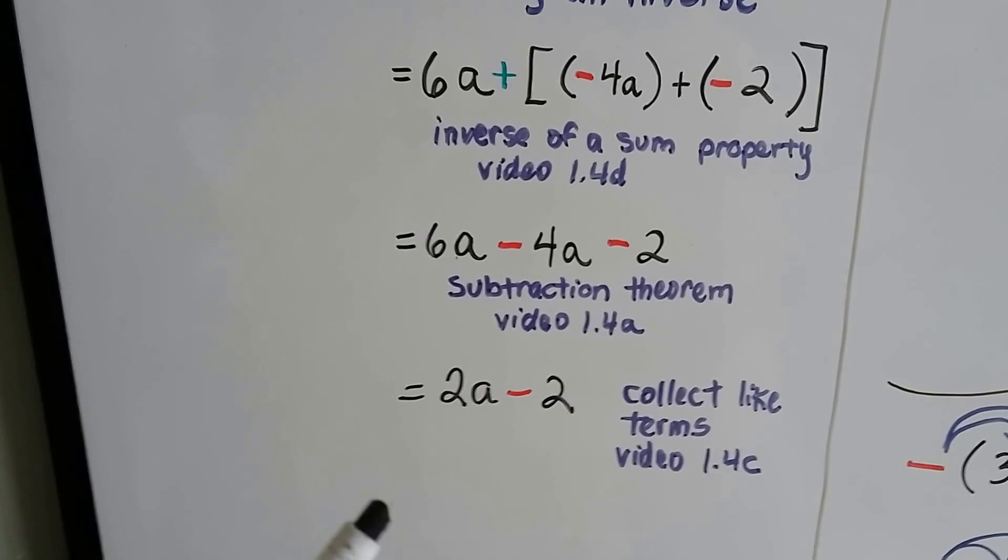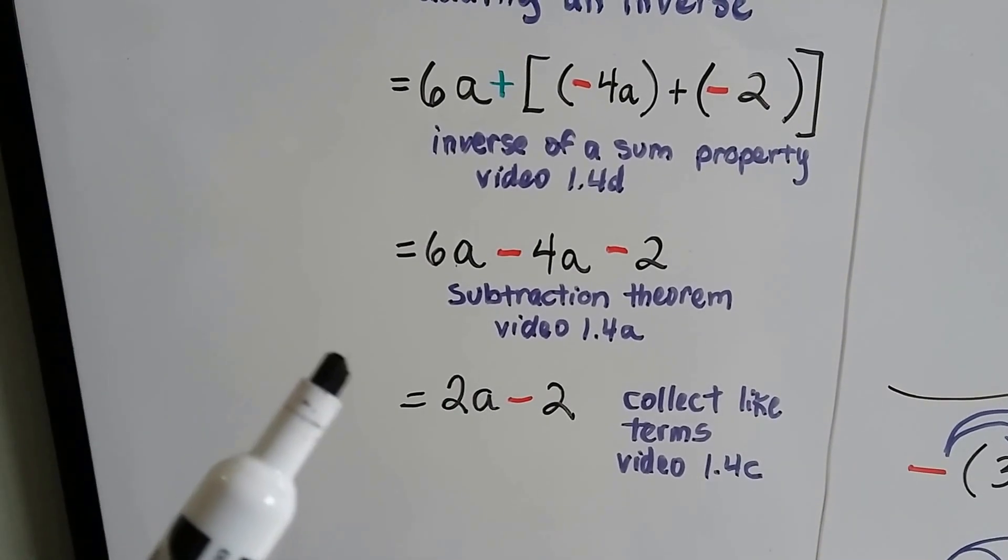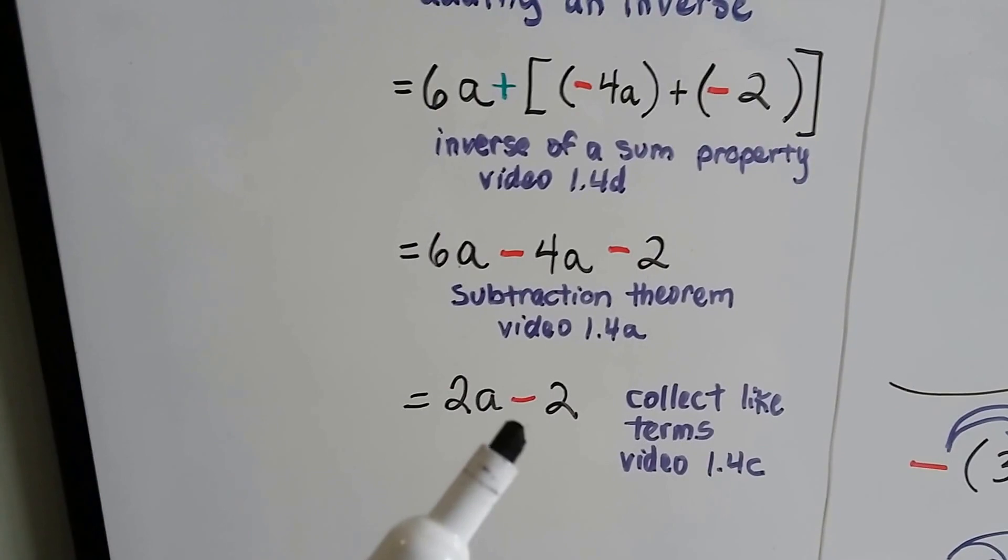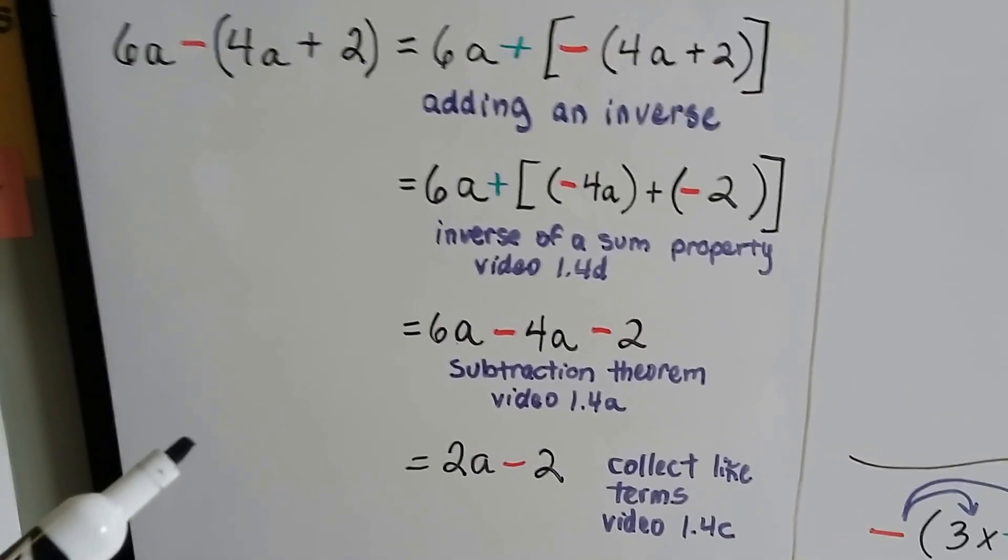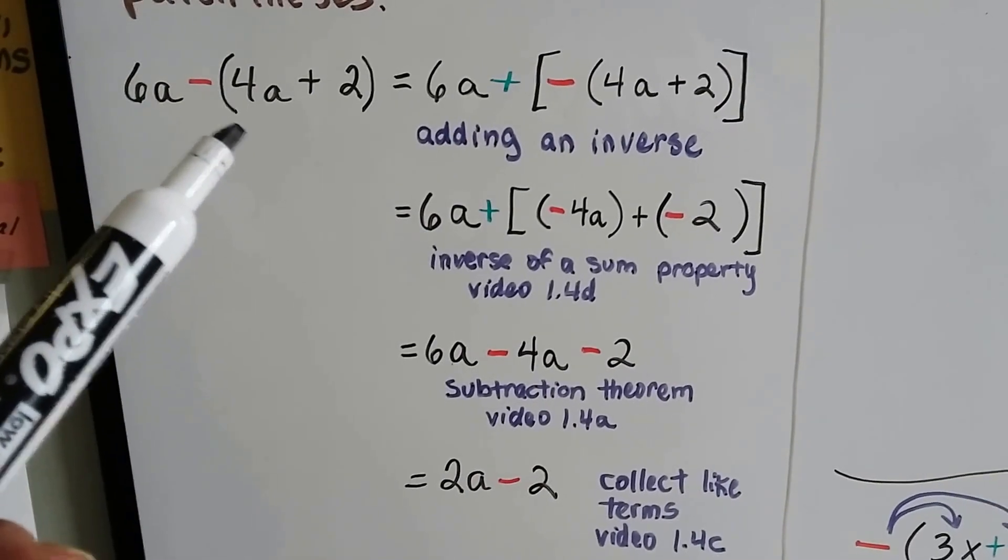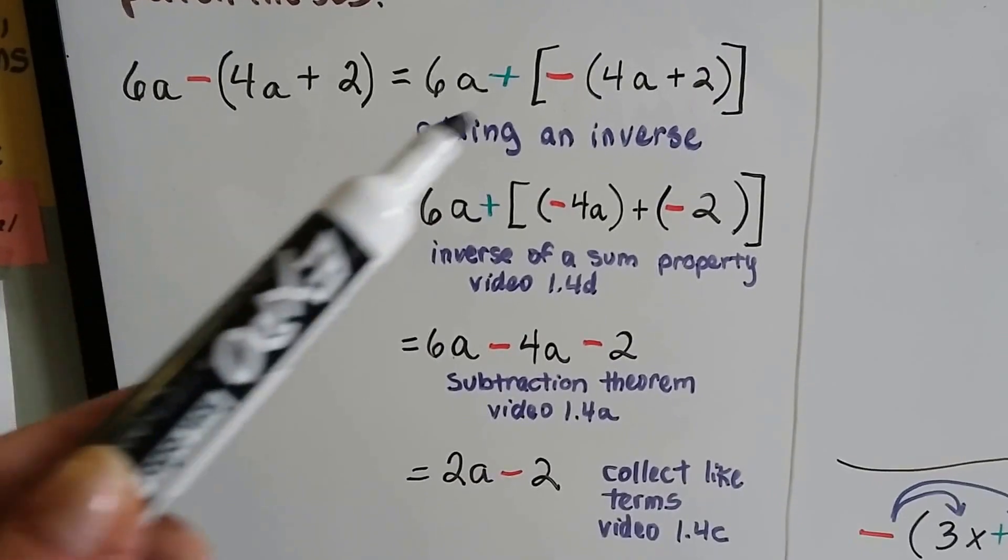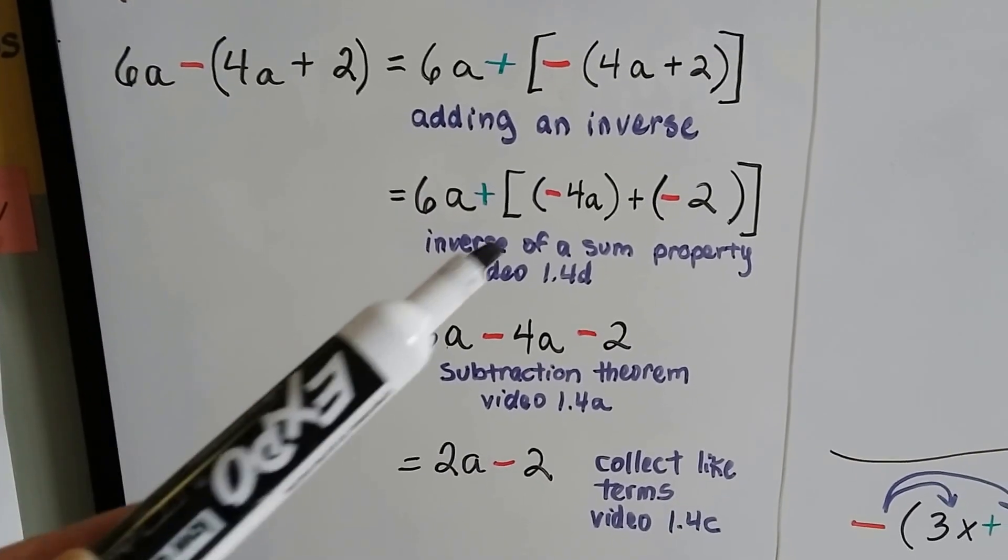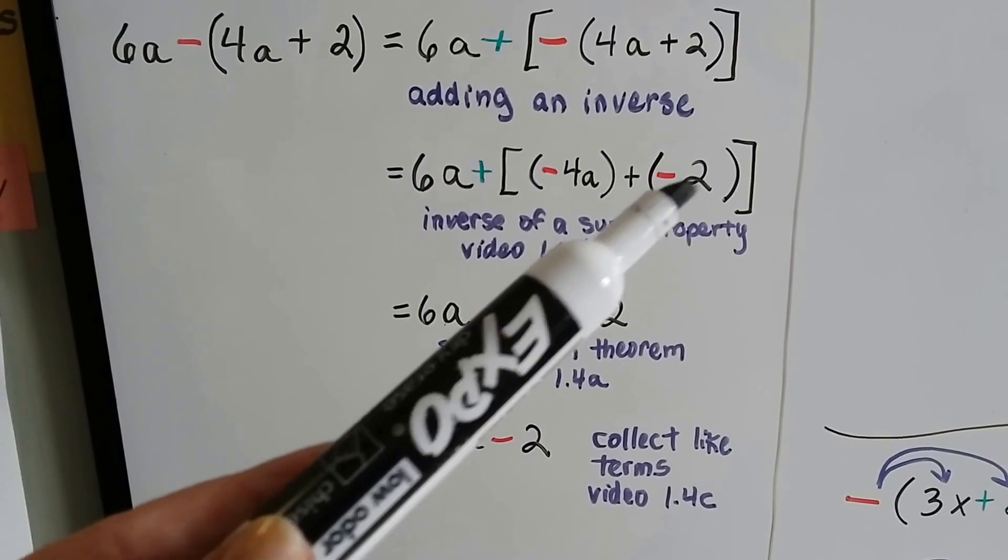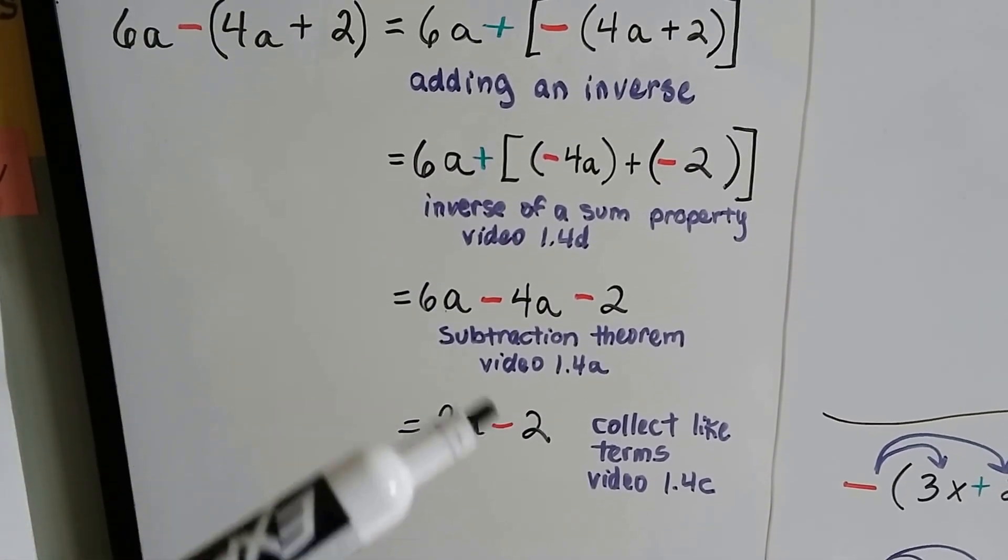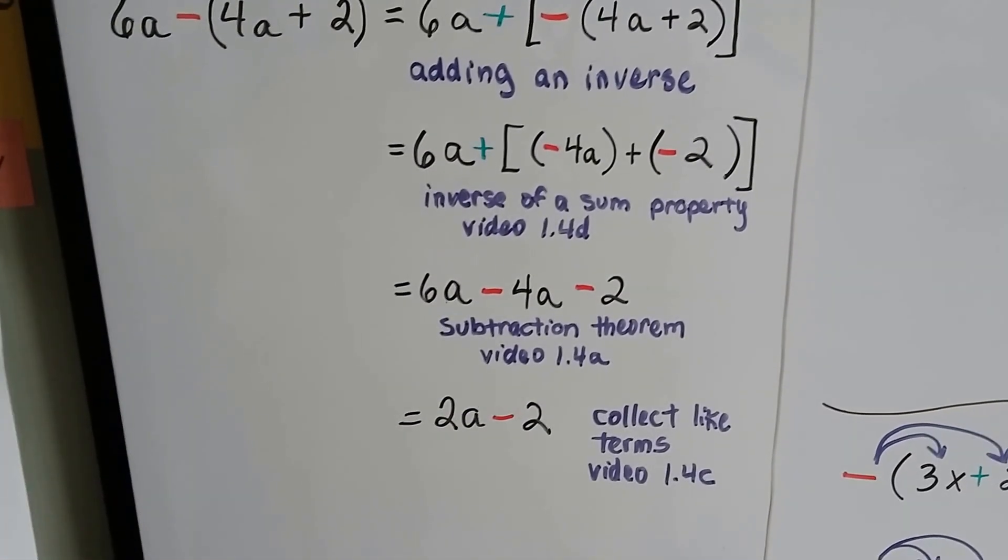we did that in video 1.4c. If you haven't seen that one, it's in there also in the description. You can just click on it. We end up simplifying it to 2a minus 2. So do you see what we did? We did adding an inverse. We did adding a negative. And we did inverse of a sum.